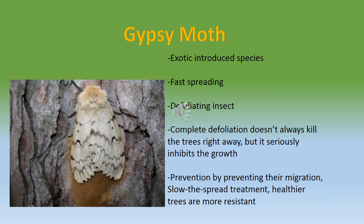Gypsy moths are defoliating insects, meaning they eat the leaves of trees. Deciduous trees use their leaves to gain food for growth and development by converting energy from sunlight through photosynthesis. They also store the excess food in their roots in the form of starch. Their growth is affected when they lose half of their foliage, which can occur when defoliating insects such as gypsy moths attack.